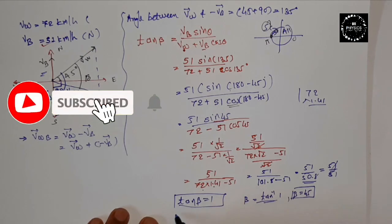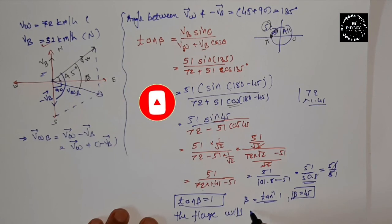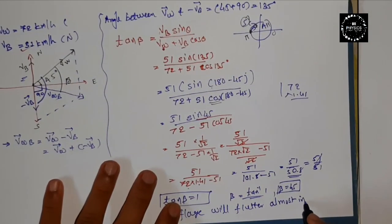So we can write it like a sentence so that you can write like that. Hence, the flag will flutter almost in the east direction.